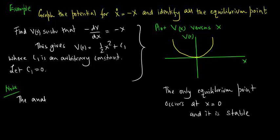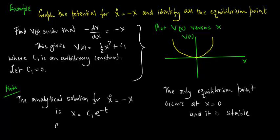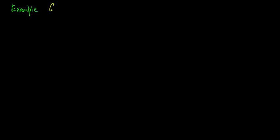The analytical solution for x dot equals minus x is x equals c1 e to the minus t, where c1 is a constant. Let us consider another example.